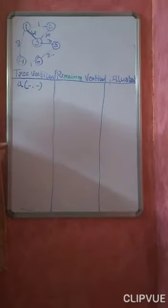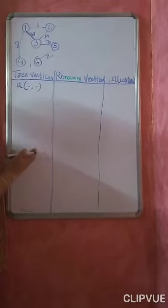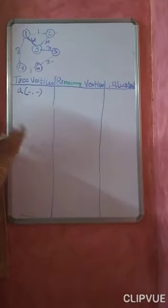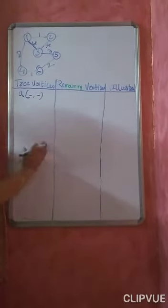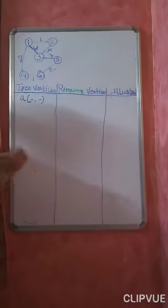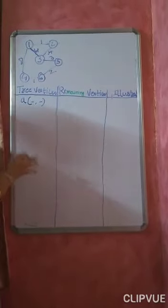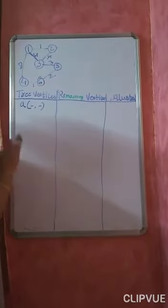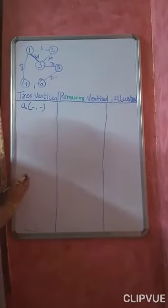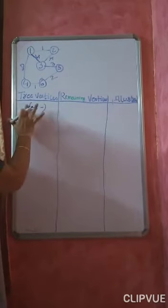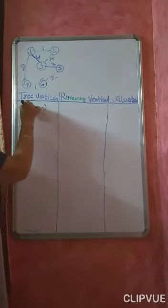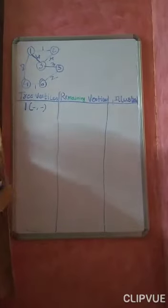We will consider this particular graph and see how Prim's algorithm can be used to construct the minimum spanning tree. This is the tracing part. In the exam, internal, or lab, when asked to trace Prim's algorithm, write the different columns like this. Assume that I will consider vertex 1 as an arbitrary starting vertex — any arbitrary vertex can be considered.